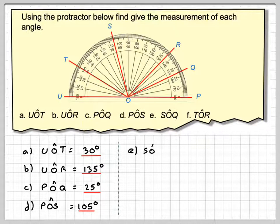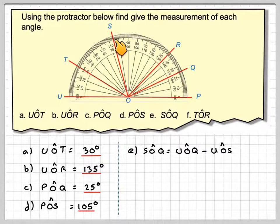Right, now we've got to measure SOQ, so SOQ. We're going to measure this angle here. Now to do that, I'm going to do UOQ and subtract from that UOS. So UOQ is going to be 155, because the 0 is on the U, so it's going to be 155.